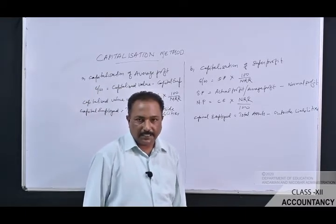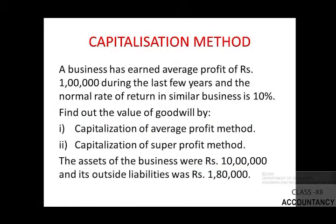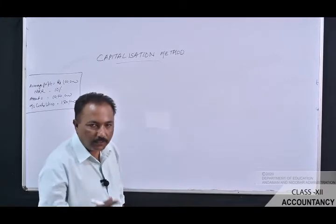Now let's take a numerical question for the capitalization method. A business has earned an average profit of ₹1,00,000 during the last few years. The normal rate of return in similar businesses is 10%. The assets of the business are ₹10,00,000 and outside liabilities are ₹1,80,000. Find the value of goodwill by both the capitalization of average profit method and the capitalization of super profit method.